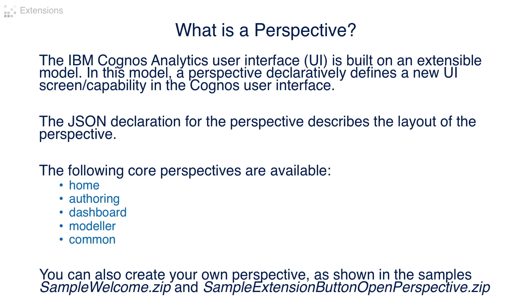What is a perspective? The IBM Cognos Analytics user interface is built on an extensible model. In this model, a perspective declaratively defines a new UI screen or capability in the Cognos user interface. The JSON declaration for the perspective describes the layout of the perspective. The following core perspectives are available: Home, Authoring, Dashboard, Modeler, and Common. You can also create your own perspective as shown in the samples SampleWelcome.zip and SampleExtensionButtonOpenPerspective.zip.